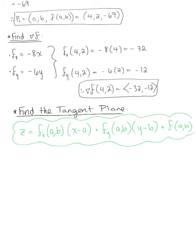Plugging everything in that we just found, we have z equals negative 32 multiplied by (x - 4) minus 12 multiplied by (y - 2) minus 69.